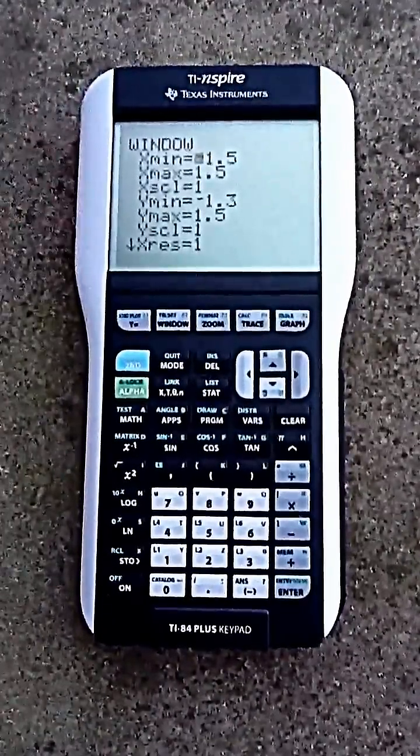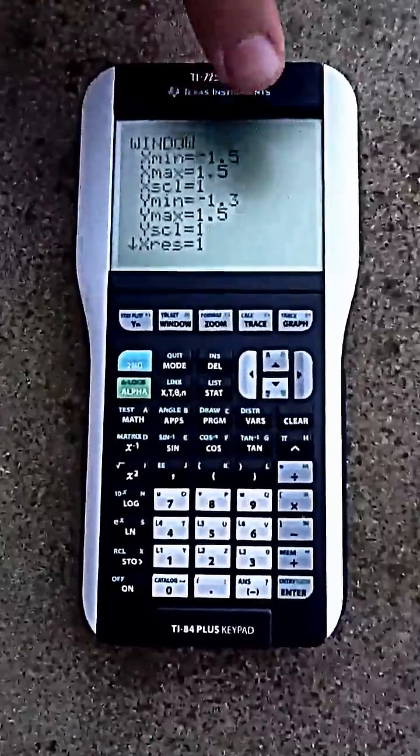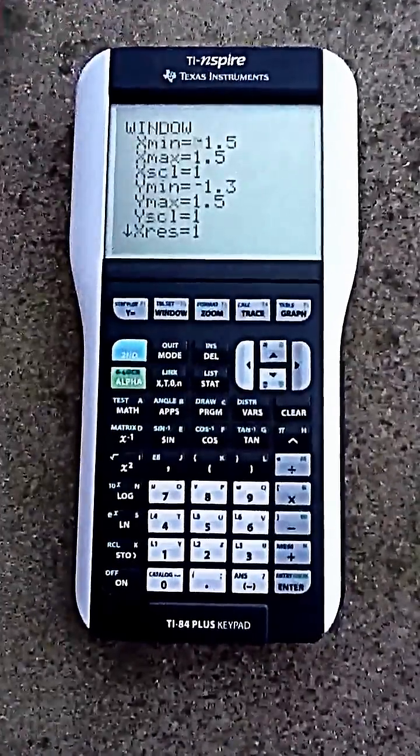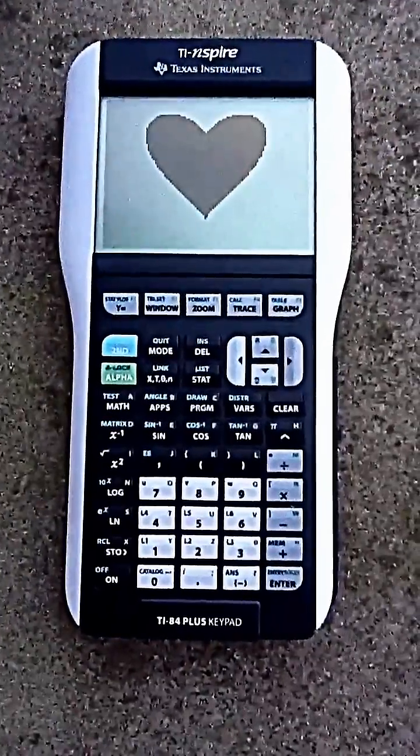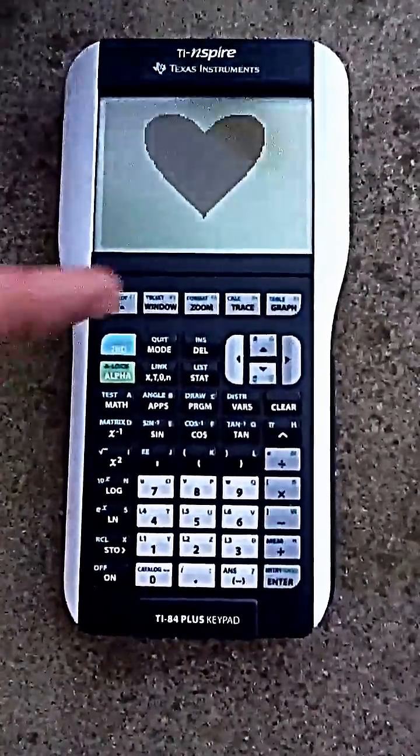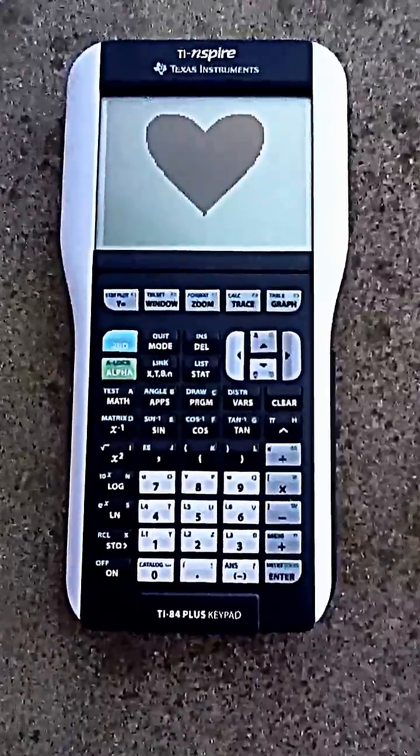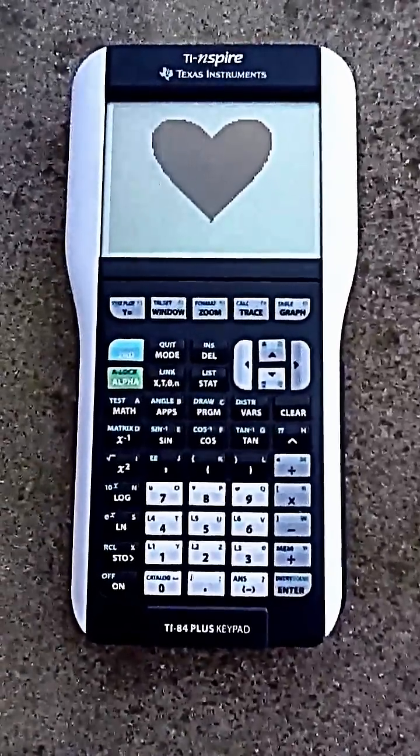Then for Y minimum, you're going to have it negative 1.3, and then for Y maximum, it's going to be 1.5. And that will cause your heart to become longer and wider. And that makes your heart bigger, and that's how you make the heart. Thanks.